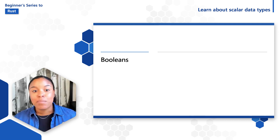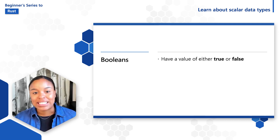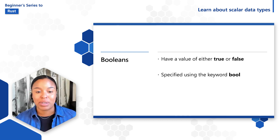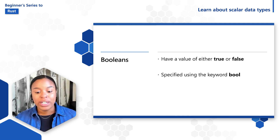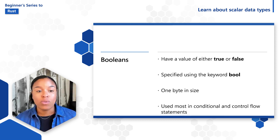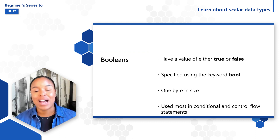The Boolean type has either a value of true or false. It is specified using the keyword bool, and Booleans are one byte in size. They are most commonly used through conditional and control flow statements, which will be covered in another video.